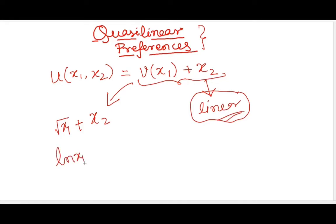Then I can also have ln x1 plus x2. So these two are examples of quasilinear utility functions. Now obviously the underlying preference is quasilinear preferences, but the utility for that preference is quasilinear utility.